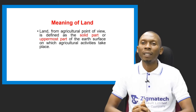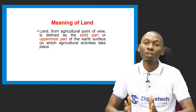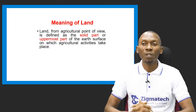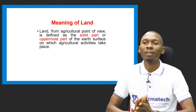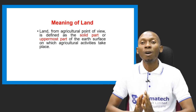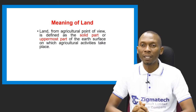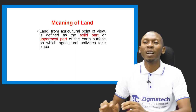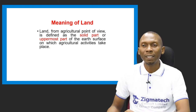From the agricultural point of view, land is defined as the solid part or uppermost part of the earth's surface on which agricultural activities take place.